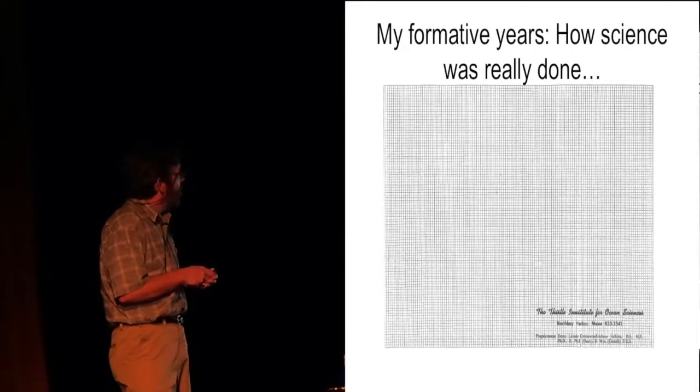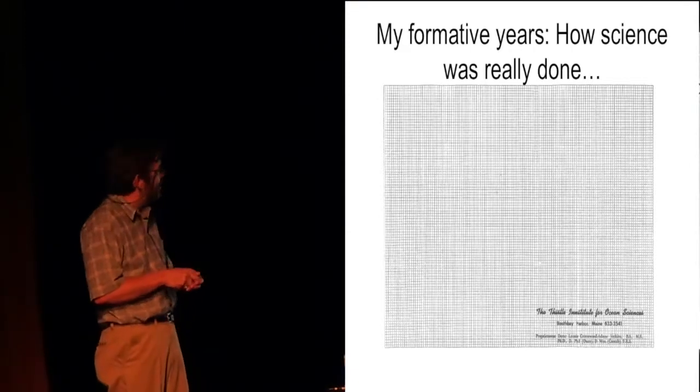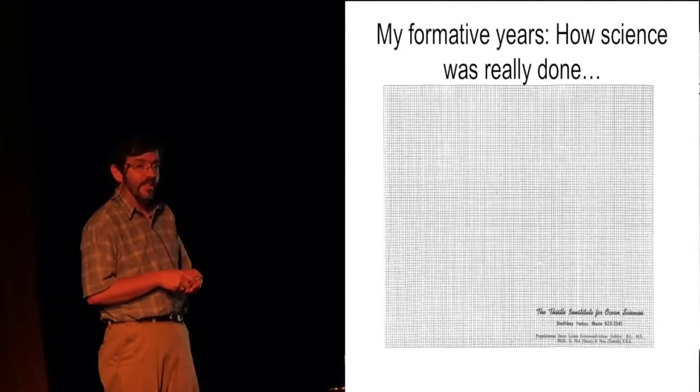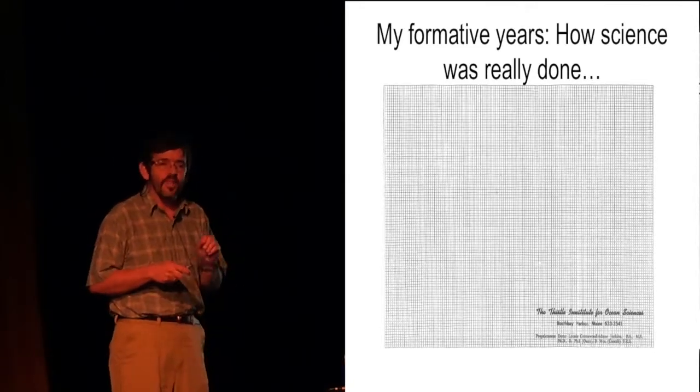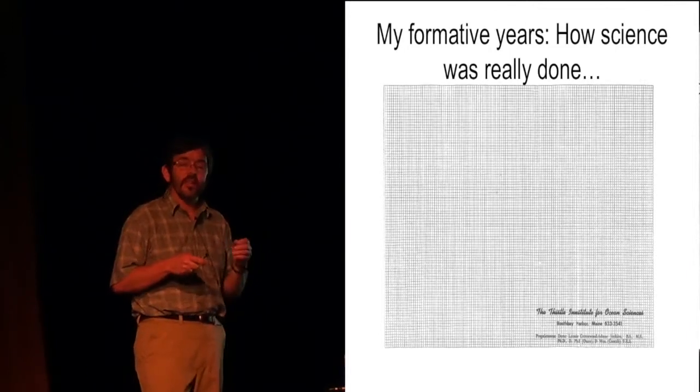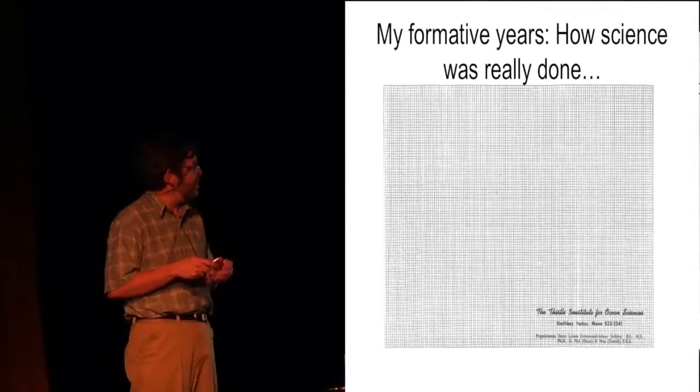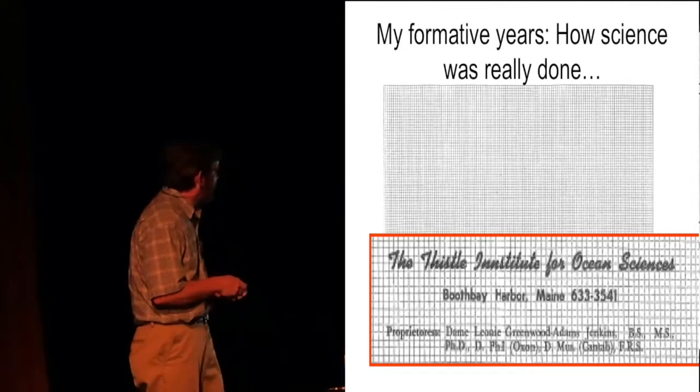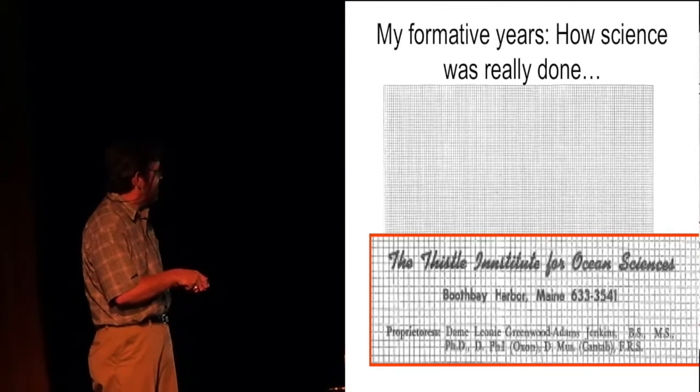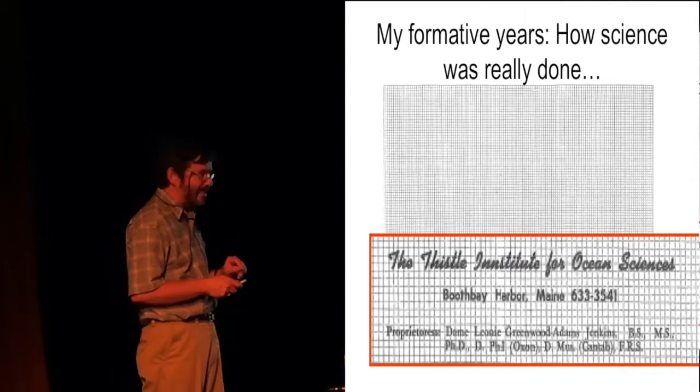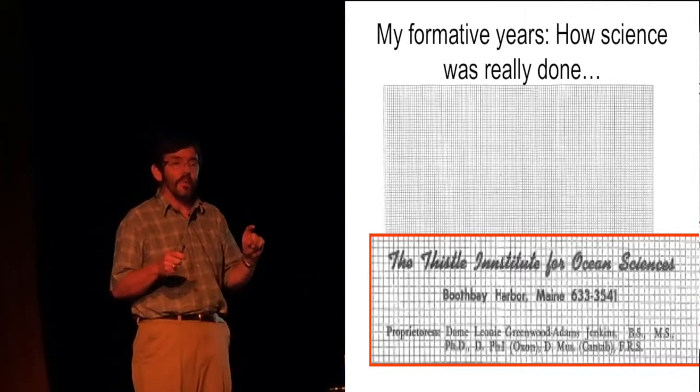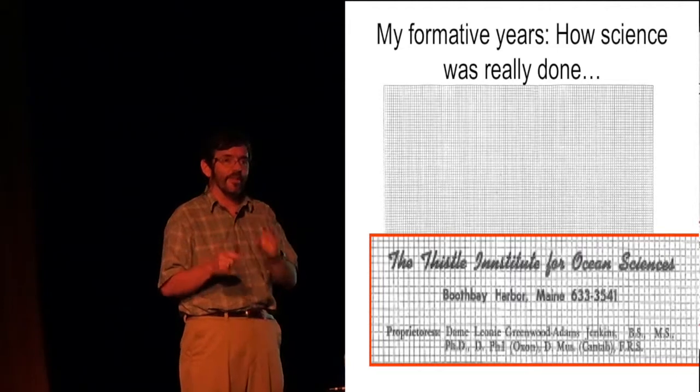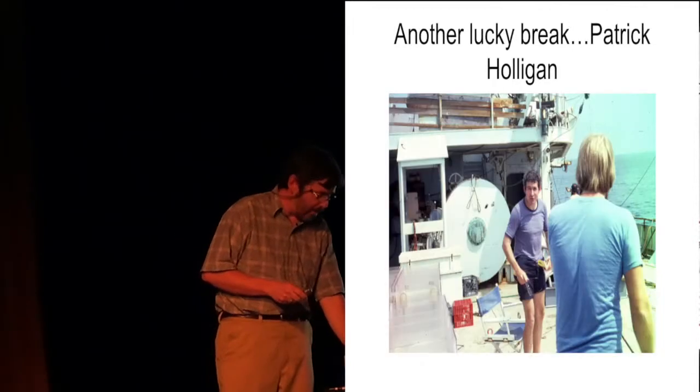So now, my formative years, I've learned how science was really done. And this may look to you like a piece of graph paper, but no, it's not. This is a placemat for the Thistle Inn. And business at the Thistle was done in the very early days of Bigelow. Everyone went to lunch at the Thistle. And the owner of the Thistle got so fed up with all the doodlings on pieces of paper that she made a placemat and put in the corner the Thistle Institute for Ocean Sciences. But this is where ideas happened. People would sit around the table and bat around ideas. It was a fantastic experience for me.